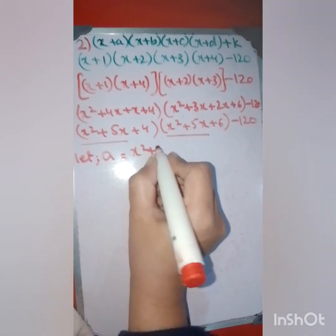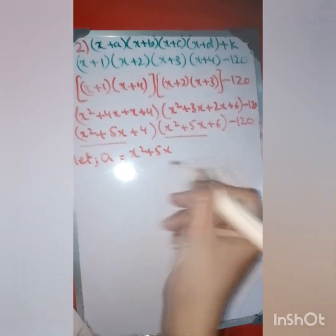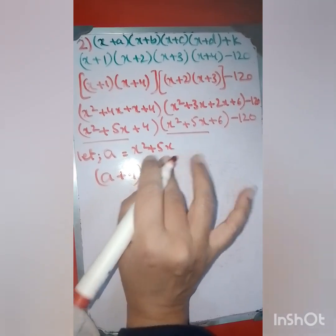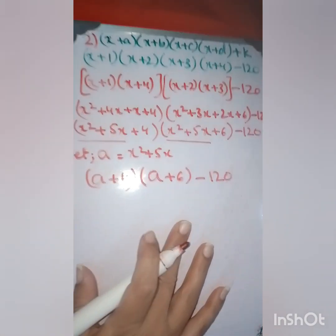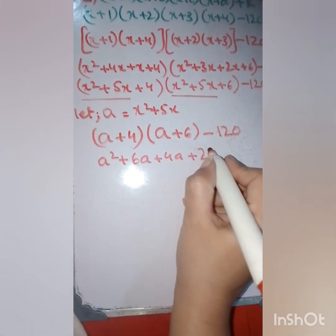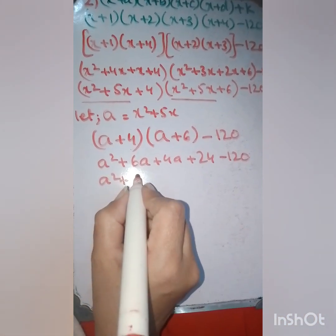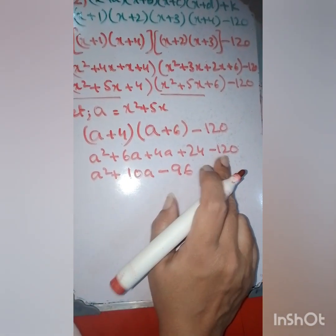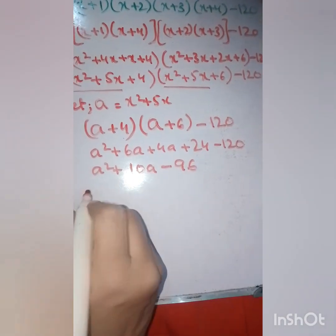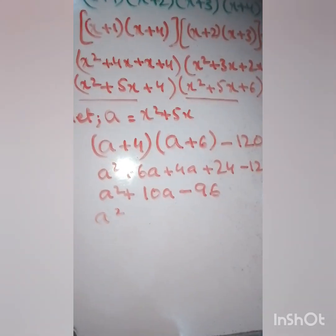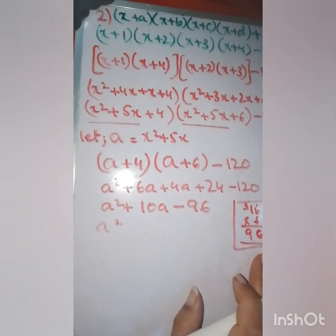So I will let a equal x² + 5x. Substituting, the expression simplifies to (a + 4)(a + 6) minus 120. Expanding gives a² + 6a + 4a + 24 minus 120, which is a² + 10a minus 96. Now I need to find factors of 96: 16 times 6 equals 96, and 16 minus 6 equals 10, which matches our middle term.